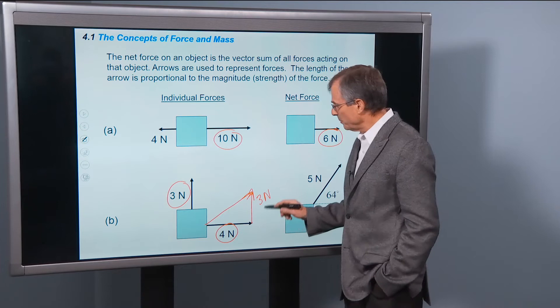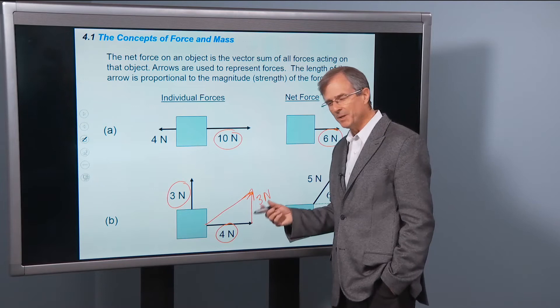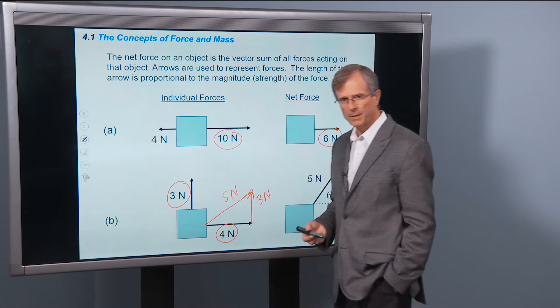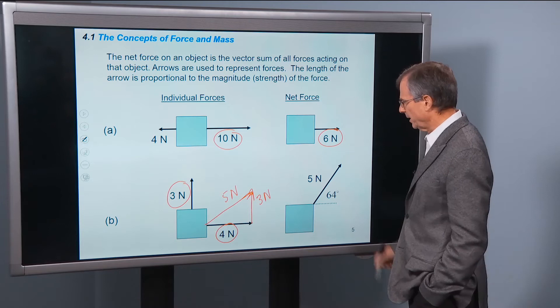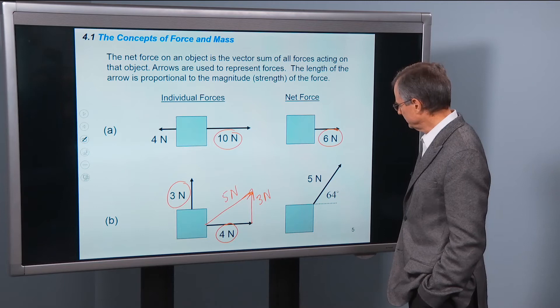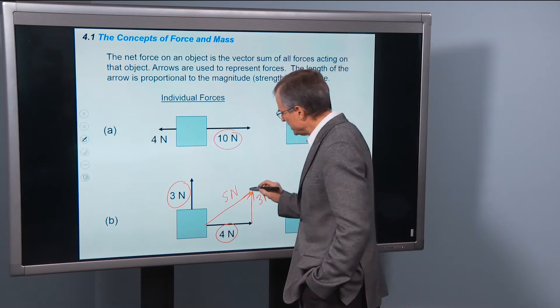And some of you might remember that a triangle with two sides, one being 3 and one being 4, has a hypotenuse that's 5N, and you can verify that with the Pythagorean theorem. And you can also calculate the angle of the force. I'm not going to go through that. You can take the inverse tangent, etc. But the net force is this vector right here.